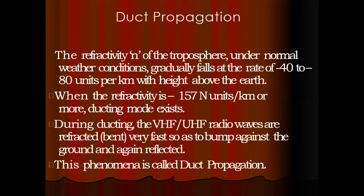Duct propagation is also an important parameter in wave propagation. The refractivity N of the troposphere under normal weather conditions gradually falls at the rate of −40 to −80 units per kilometer with height above the Earth. When the refractivity is −157 units per kilometer or more, ducting mode exists. During ducting, VHF radio waves are refracted — bent very fast — so as to bounce against the ground and again upward. This phenomenon is called duct propagation.